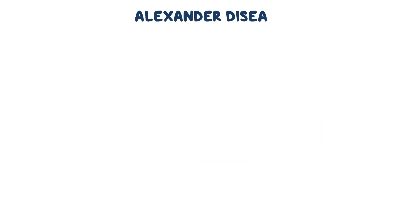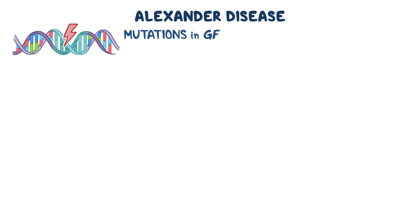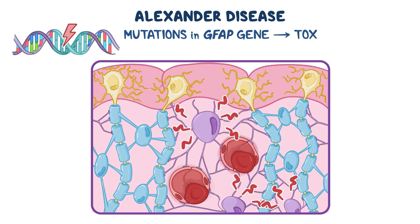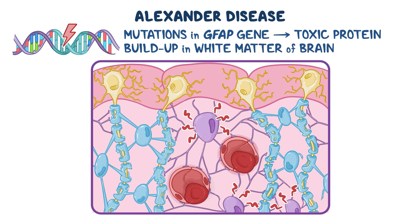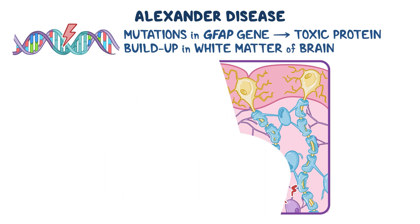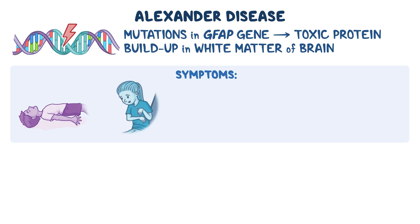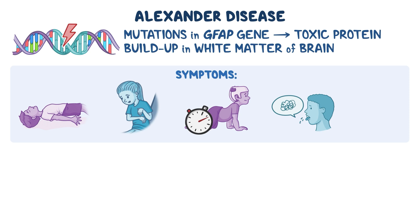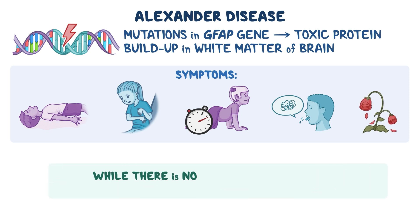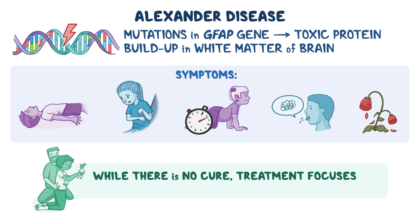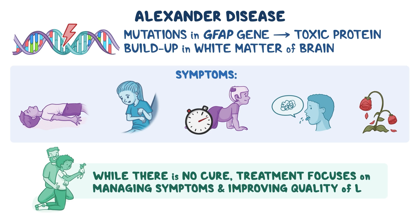As a quick recap: Alexander disease is a rare genetic disorder caused by mutations in the GFAP gene, leading to toxic protein buildup in the white matter of the brain. Symptoms include seizures, spasticity, developmental delays, and cognitive decline, with more severe cases often resulting in early death. While there is no cure, treatment focuses on managing symptoms and improving quality of life.